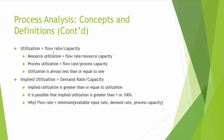Another similar concept is implied utilization. The definition of implied utilization is demand rate divided by capacity. Implied utilization is greater than or equal to utilization because the two denominators are the same, but demand rate is always greater than or equal to flow rate. It is also possible that implied utilization is greater than 1 or 100%, which happens when demand rate is greater than or equal to capacity.